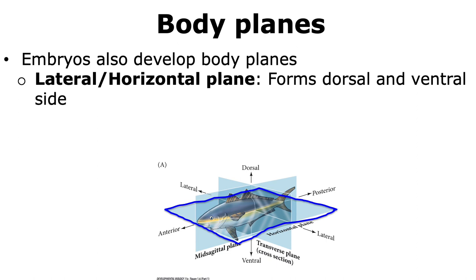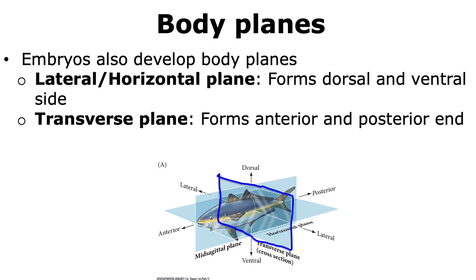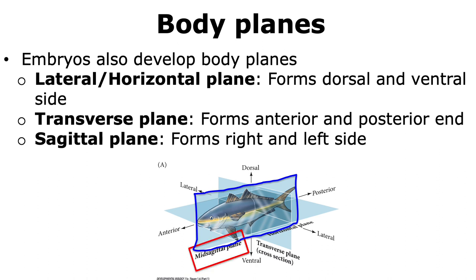In addition to body axes, we also have body planes. The lateral or horizontal plane, shown as a dark blue line, separates the body into the dorsal and ventral parts. The transverse plane separates the body into the anterior and posterior parts, as shown by the red boxes in the figure. The sagittal plane separates the body into right and left. Please remember the various body axes and body planes.